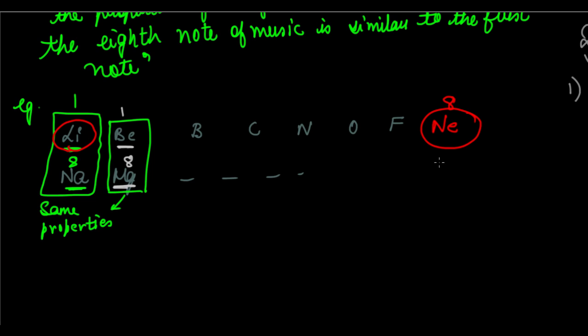Same is the case further along: after sodium, magnesium, aluminium, silicon, phosphorus, sulfur, chlorine, then argon — argon becomes the eighth element with respect to sodium. But sodium and argon do not have the same properties because sodium is a metal whereas argon is a noble gas and is unreactive. So after the discovery of noble gases, this eighth element rule failed because the eighth element no longer had similar properties to the first element.